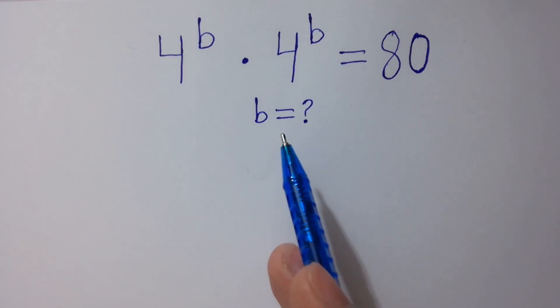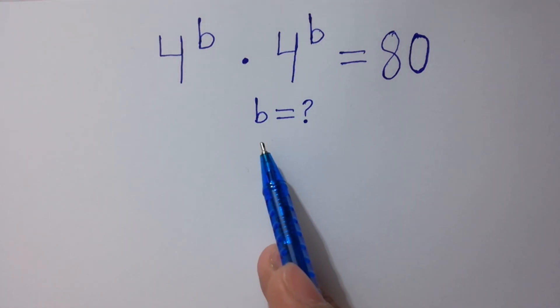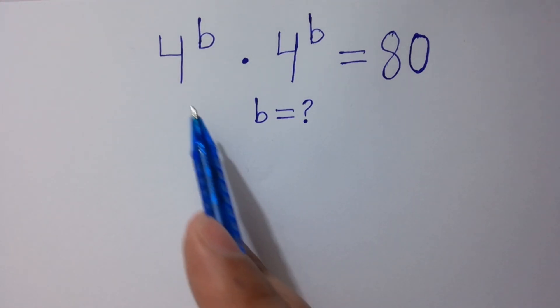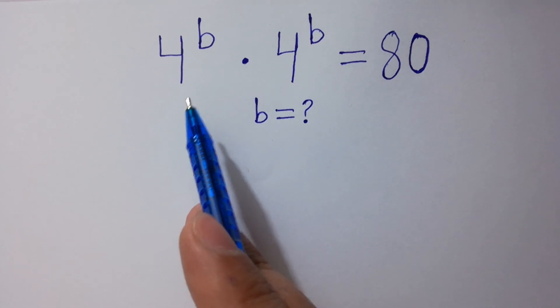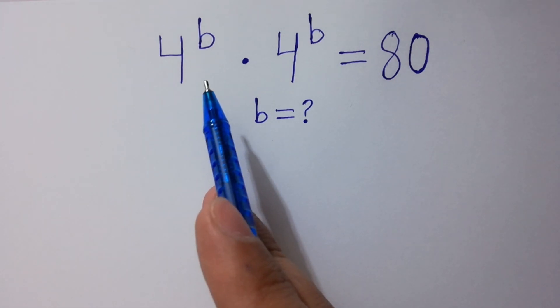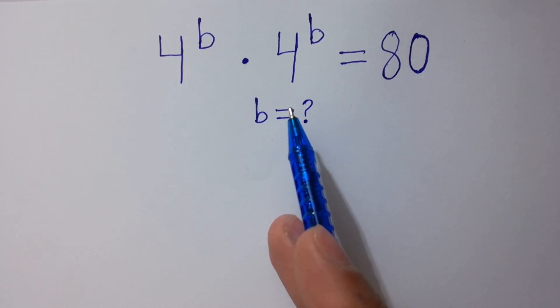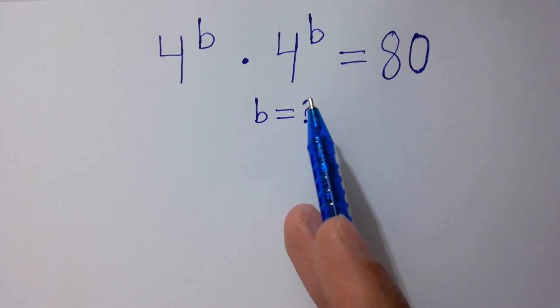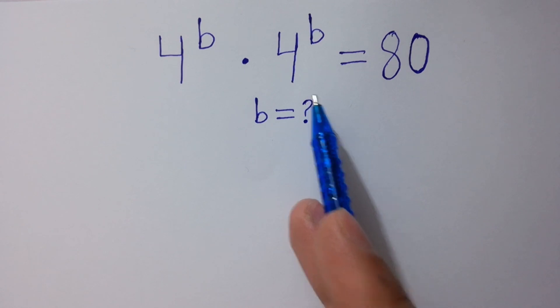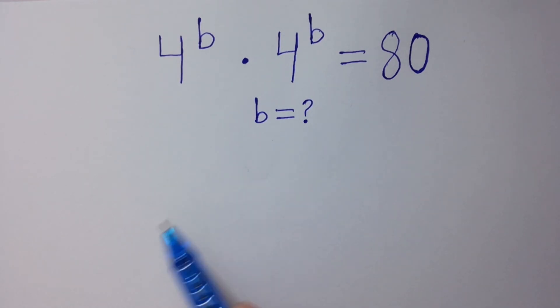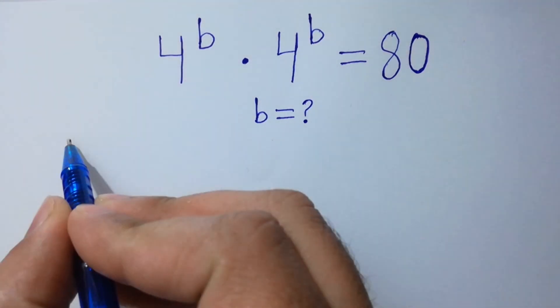Hello friends. Find the value of B if 4 to the power B times 4 to the power B equals 80. Let's have a solution.